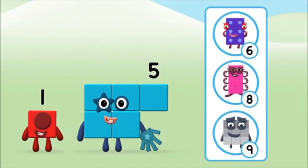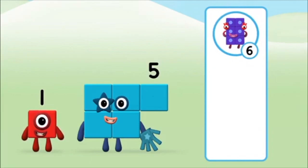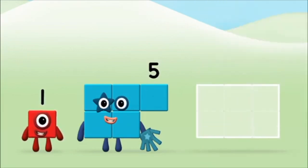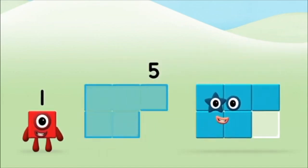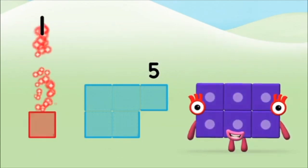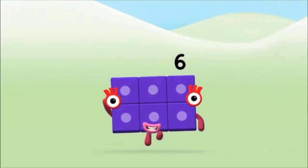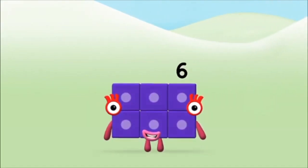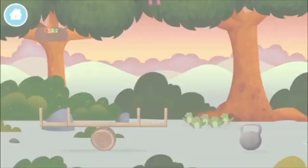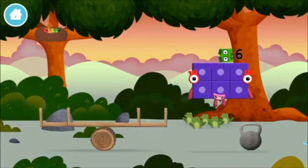Five! Do you know which number block you'll make when you add these two number blocks together? That's the correct answer! Add the number blocks together! Five! One plus five equals six! Well done! You made number block six!